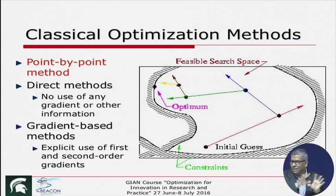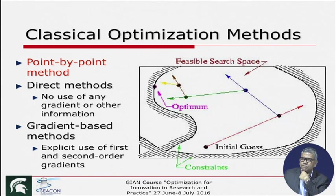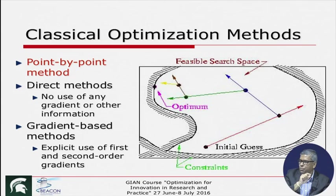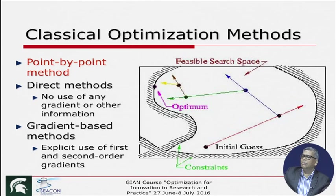That is where the NFL — the No Free Lunch theorem — comes in, which we will get into. A student asks about how the gradient determines the step size. We will talk about the algorithms tomorrow. Here I am talking about the principles of point-based optimization methods. You start with a point, the algorithm suggests which way to go and how much to go, and you repeatedly use this method, eventually hoping to come close to the optimum.